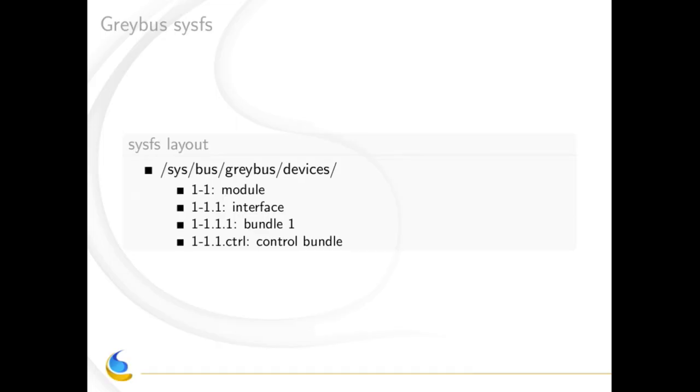The bundle defines the class, and the class may have one or more protocols. A good example for IoT is the class GBPhy, which includes GPIO protocol, I2C, and things like that. When you insert a module, Greybus will add some entries in the CFS. By using the CFS you can access all interesting information about your Greybus device, such as vendor ID, product ID, and what kind of protocols your device supports.